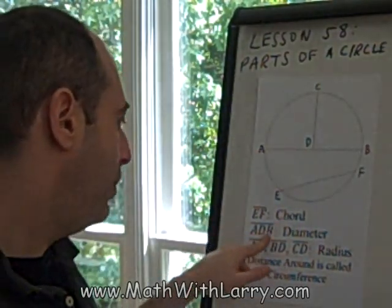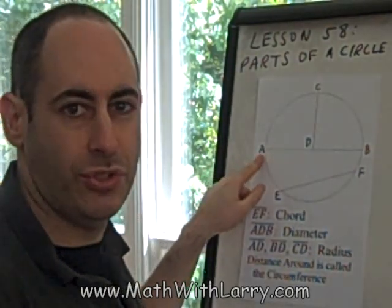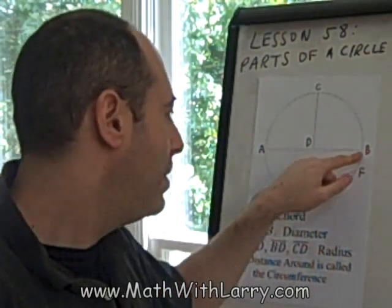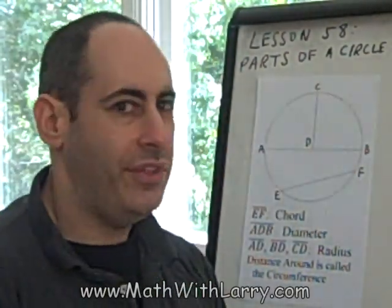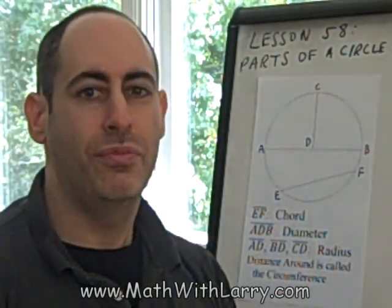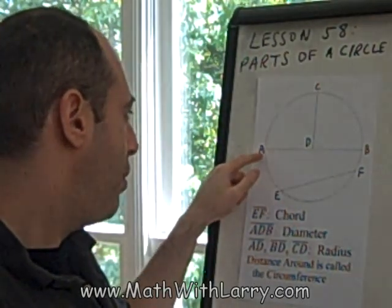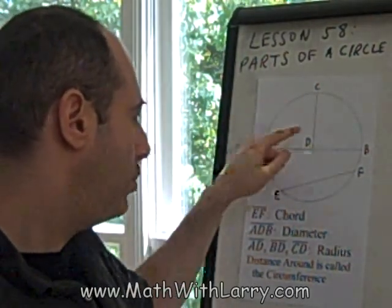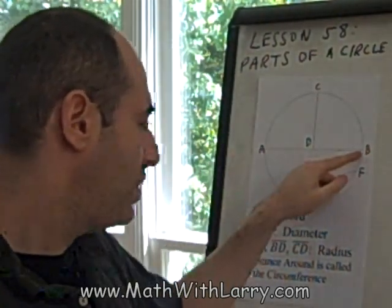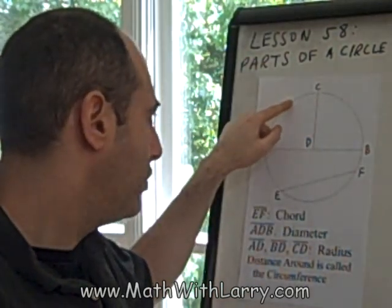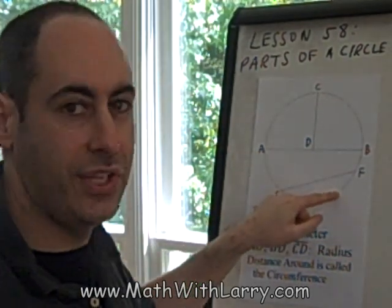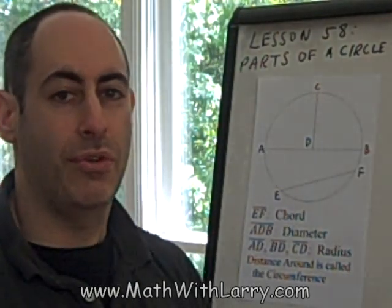Now let's look at line segment ADB. That notation tells us that it starts at point A, goes through point D, which is the center of the circle, and ends at point B. We call that the diameter of a circle. A diameter is a straight line that goes from one edge of the circle to the other, but it must cross through the center of the circle. Any line that starts on an edge, cuts through the exact center of the circle, and then connects with the other edge is called a diameter. Make sure that you remember that.